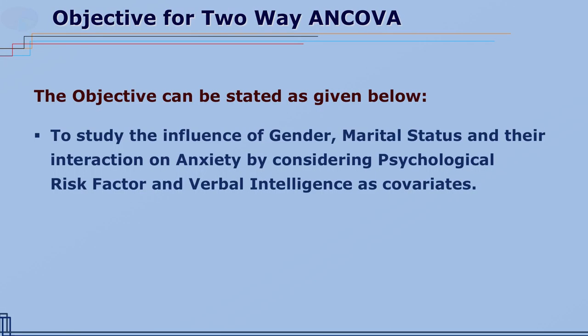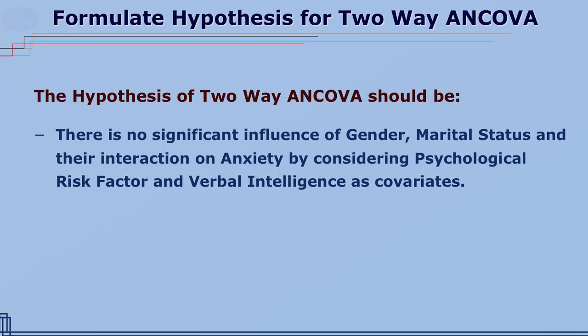How to write objectives for two-way ANCOVA: the objective can be worded as — to study the influence of gender, marital status, and their interaction on anxiety by considering psychological risk factor and verbal intelligence as covariates. The null hypothesis would be: there is no significant influence of gender, marital status, and their interaction on anxiety by considering psychological risk factor and verbal intelligence as covariates.